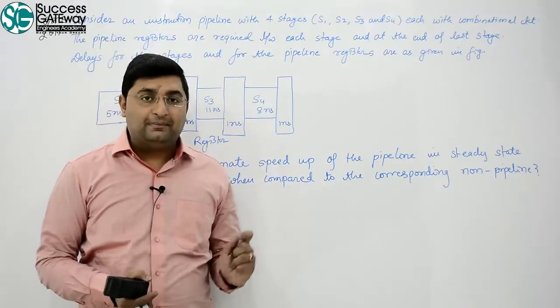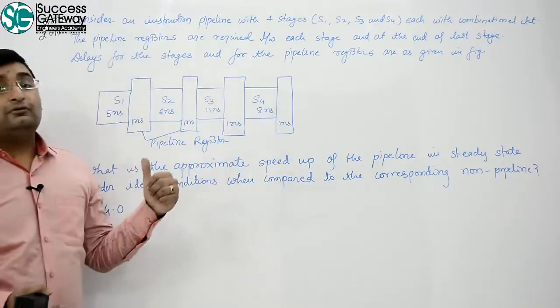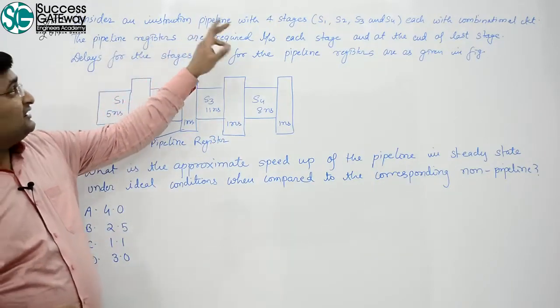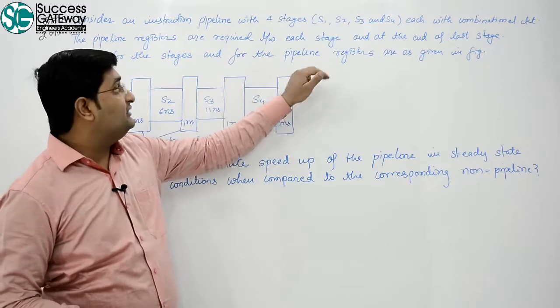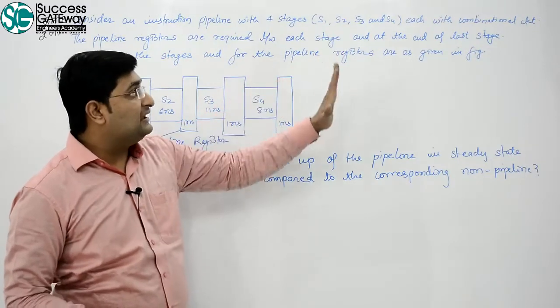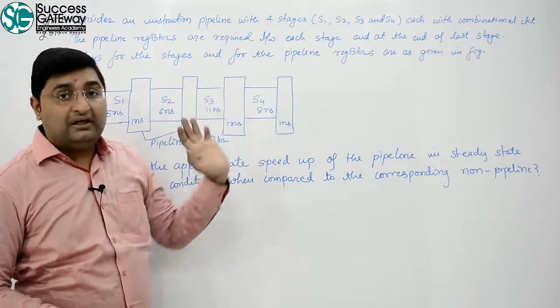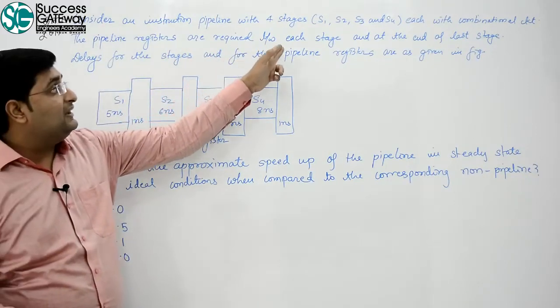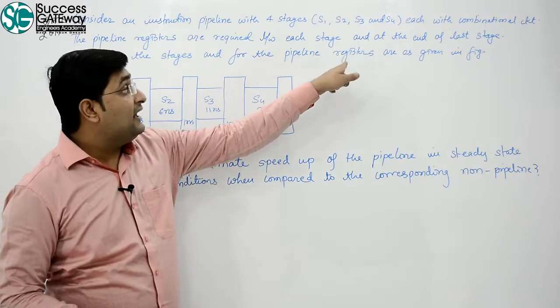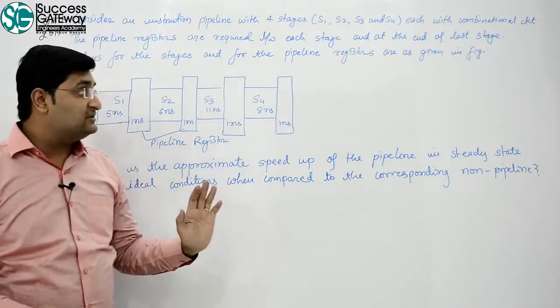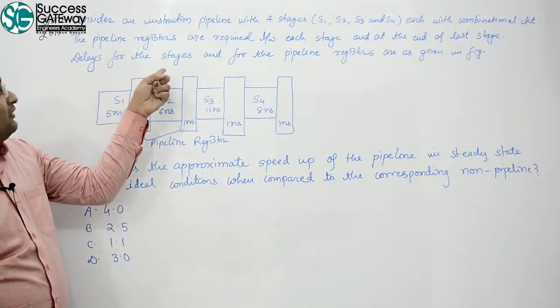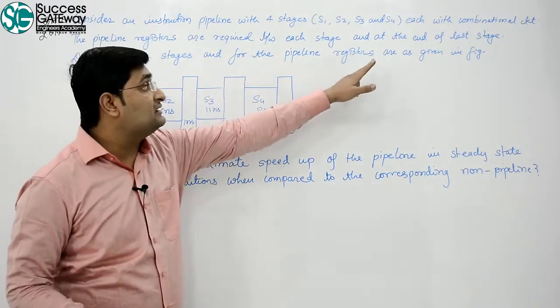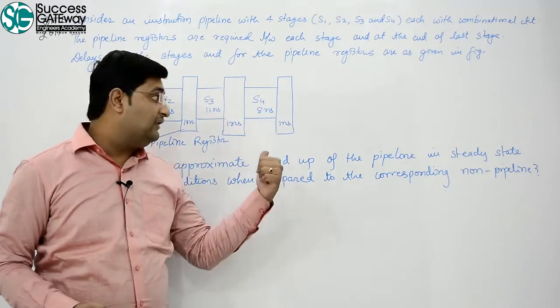Come to one more example on pipeline. It is a GATE 2011 question. Consider an instruction pipeline with 4 stages, S1, S2, S3, S4, each with combinational circuit. The pipeline registers are required between each stage and at the end of last stage. Delays for the stages and for the pipeline registers are as given in the figure.